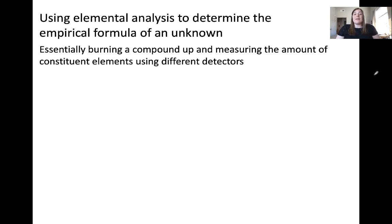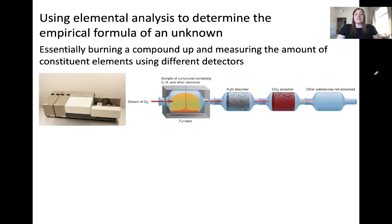What elemental analysis is, is essentially burning a compound and measuring the amount of constituent elements using different detectors. Here's a laboratory setup shown on the left and a schematic shown on the right of how elemental analysis works. What you need to know is the data that are obtained from elemental analysis include mass percentage data of different elements in the compound.